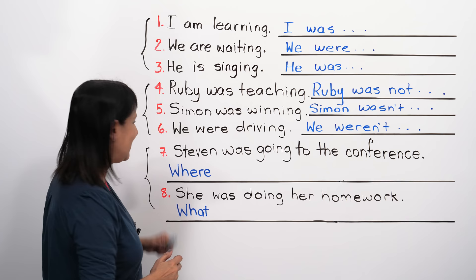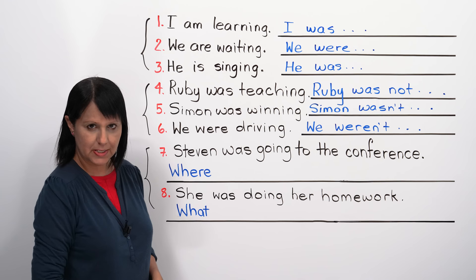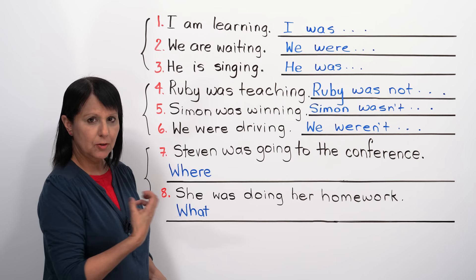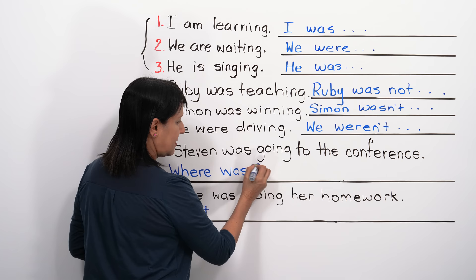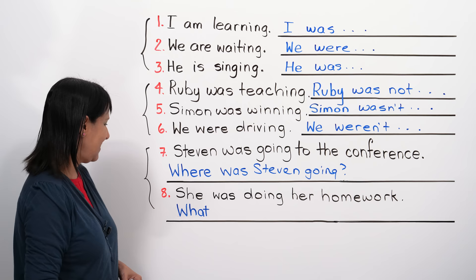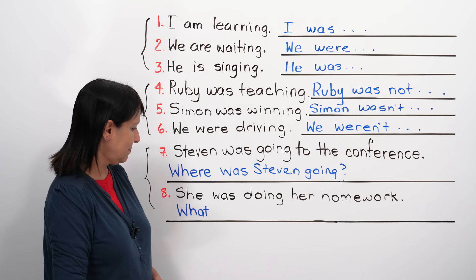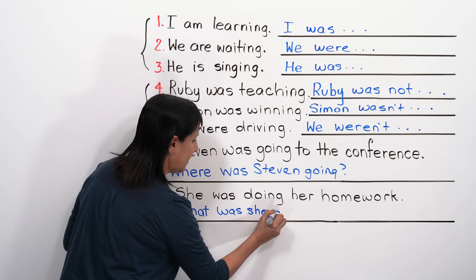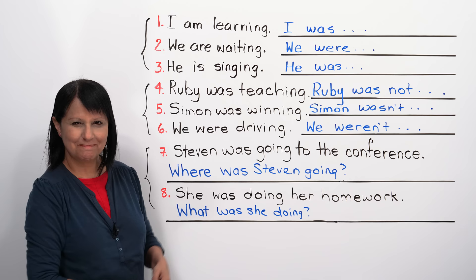Now let's form questions. 'Steven was going to the conference' — using the question word 'where' becomes 'Where was Steven going?' 'She was doing her homework' — starting with 'what' becomes 'What was she doing?' Remember, to form questions we invert the subject and the verb: 'she was' becomes 'was she,' 'Steven was' becomes 'was Steven.'